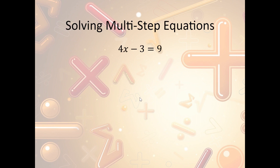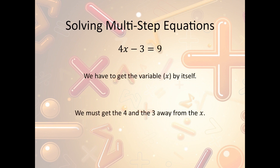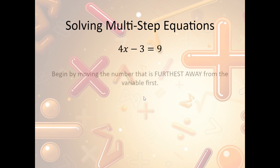Here's an example: 4x minus 3 is equal to 9. Our rule is we need to get x by itself, and we need to get the 4 and the 3 away from the x. Where do we begin? We could get rid of the 4 or the 3. The easiest solution is always to get rid of whatever's furthest away from the x first. In this case, the 4 is attached to the x, so it's really close. The 3 over here is kind of floating, so we're going to get rid of that one first.